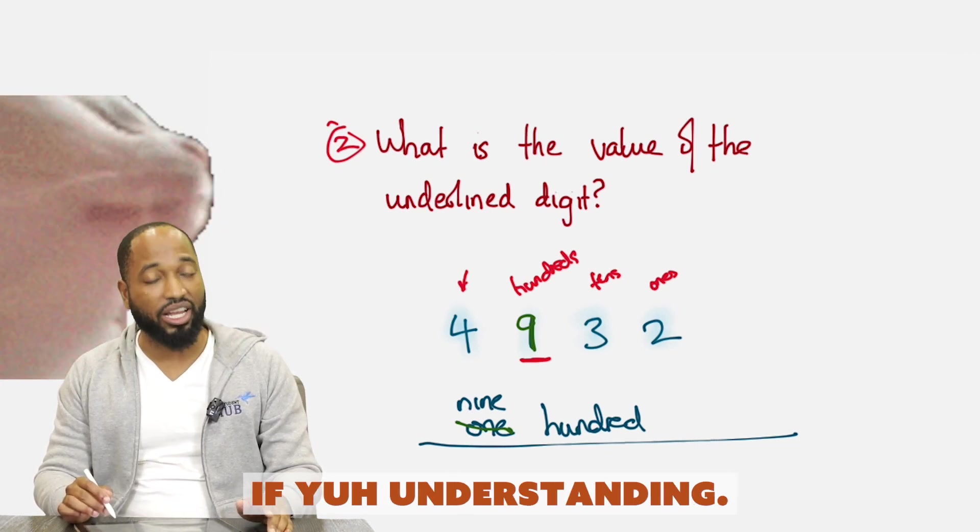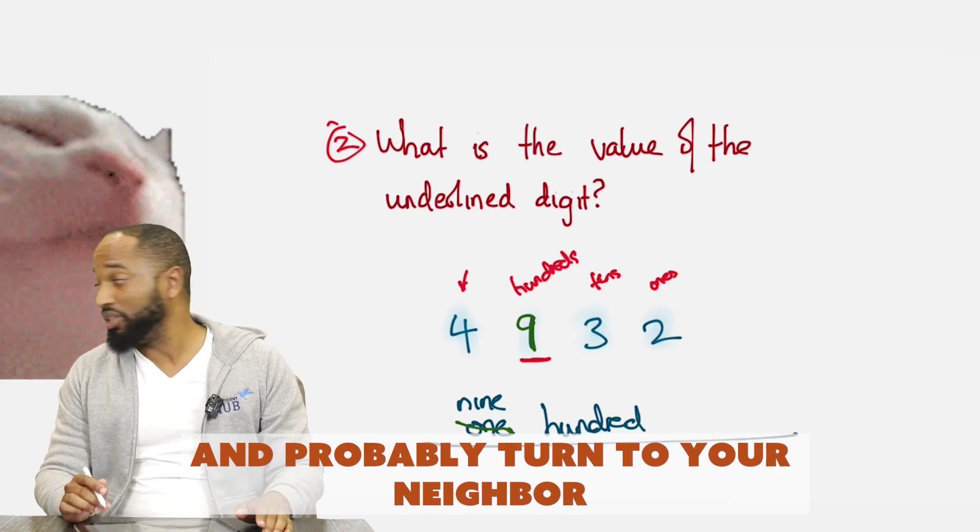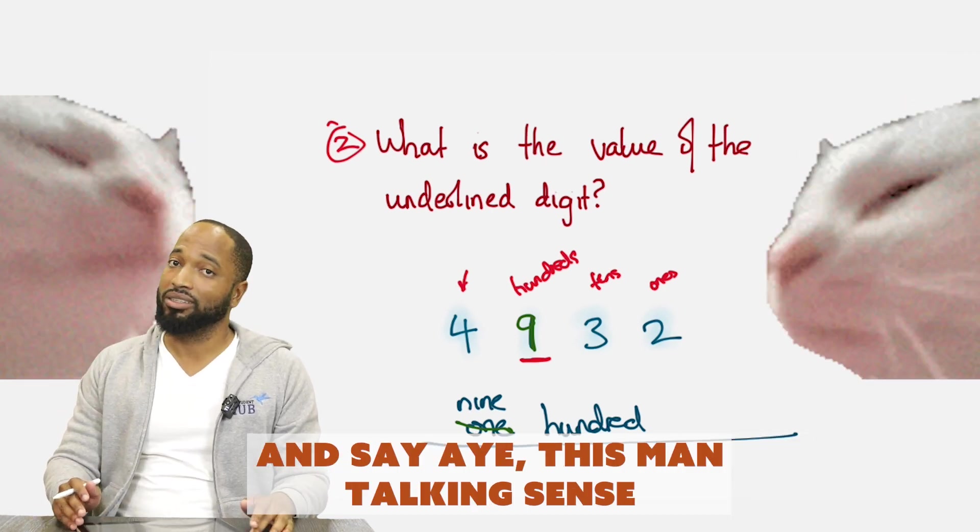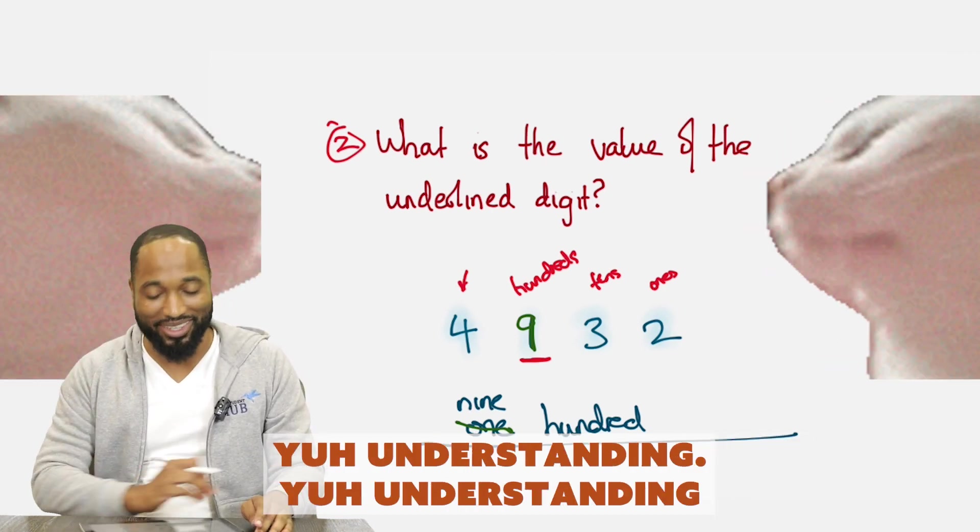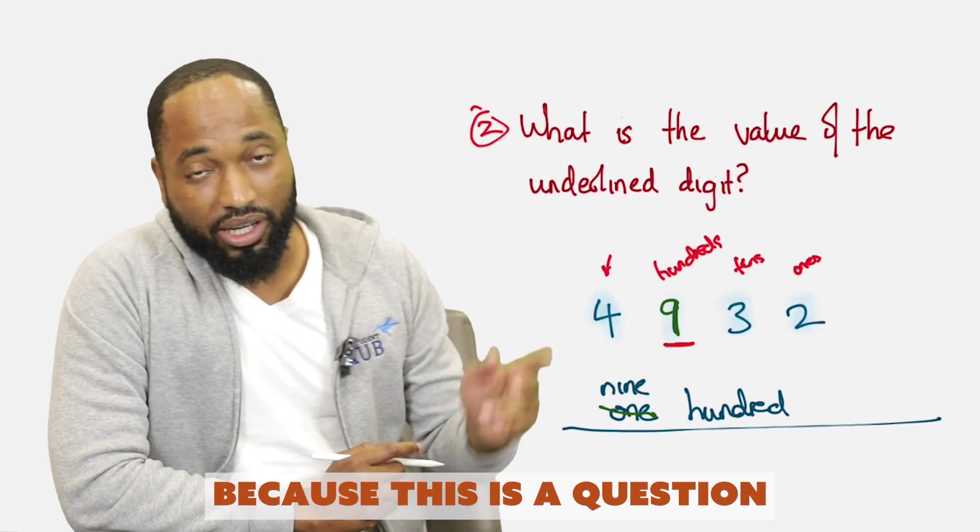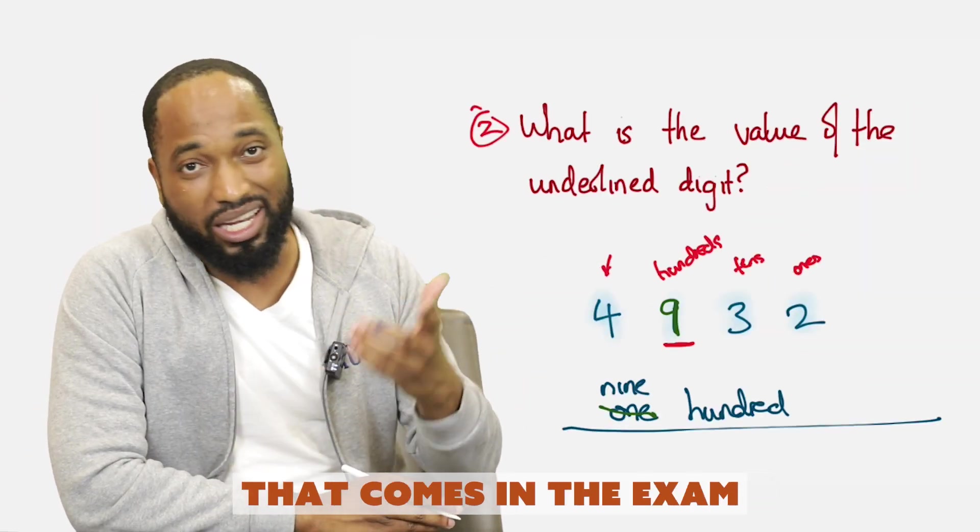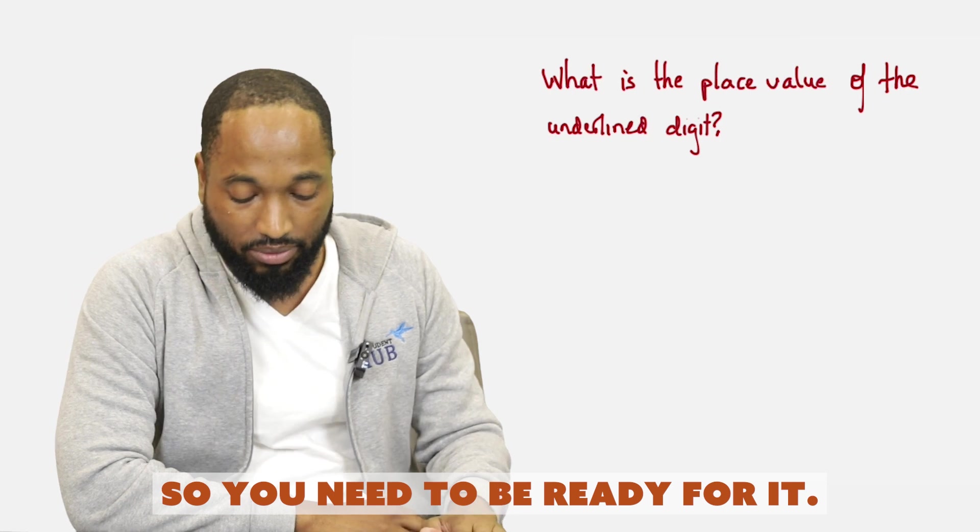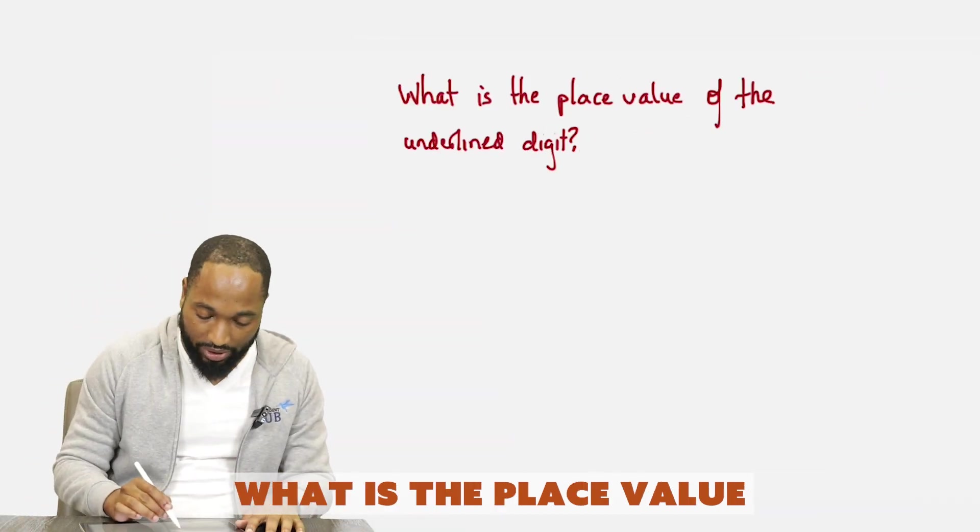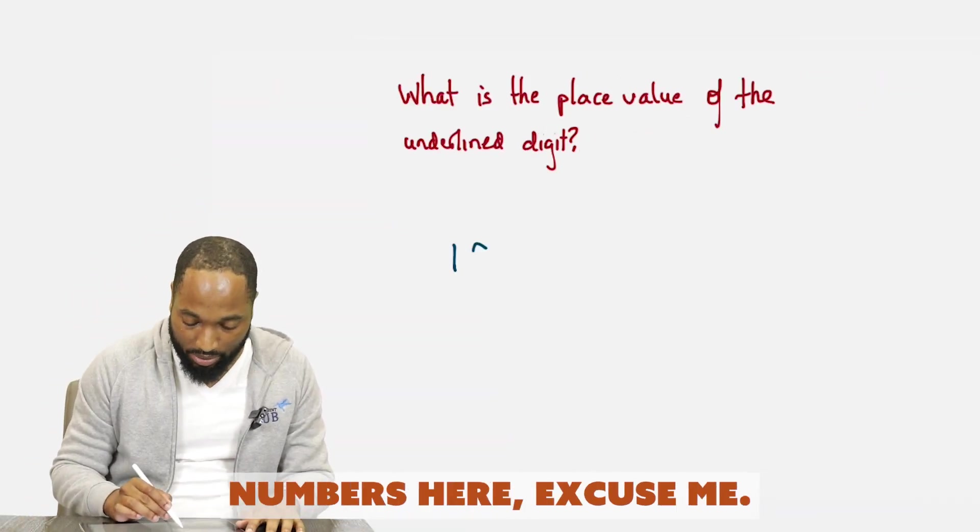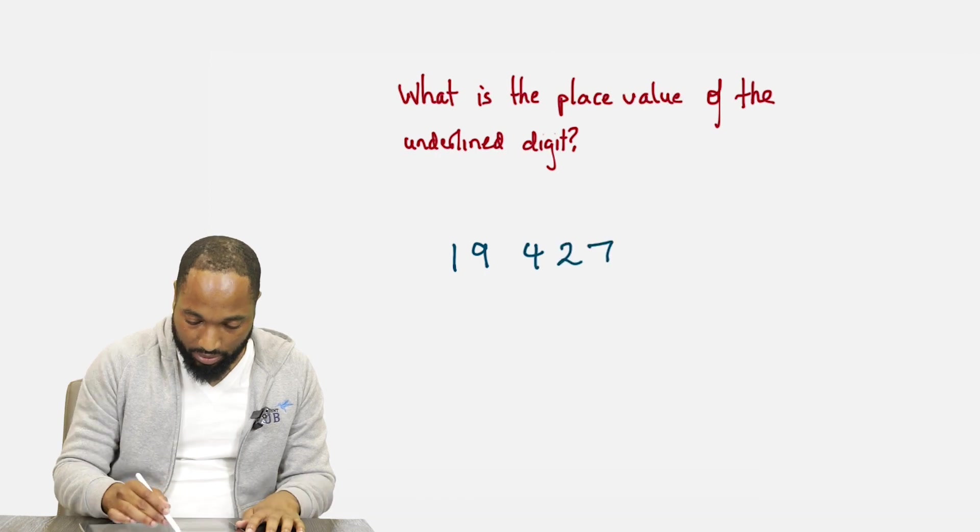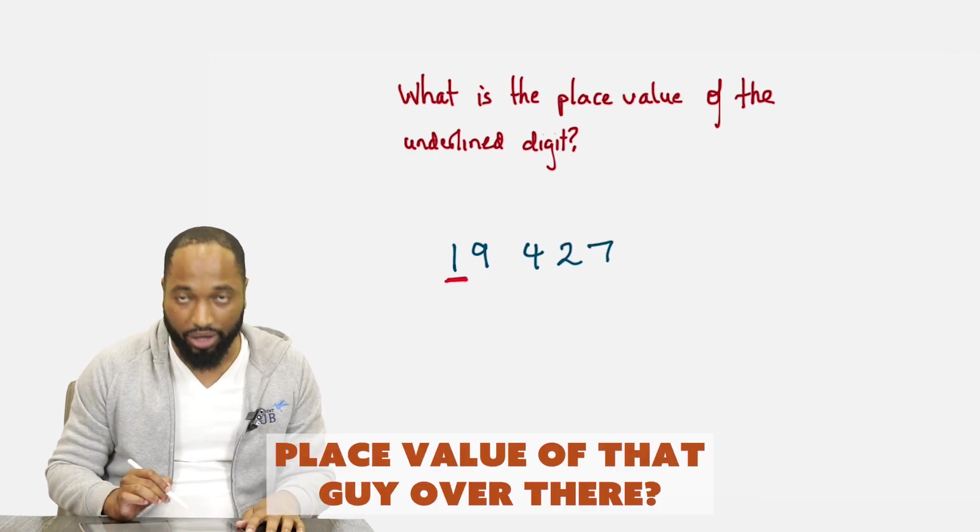Nod your head like this if you're understanding. You're understanding. Because this is a question that comes in the exam nearly every single year. So you need to be ready for it. So let me ask you our next one. What is the place value of the underlying digit? I'm just making up some numbers here.